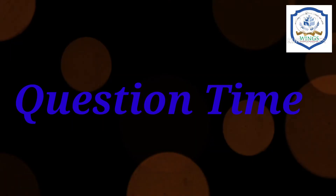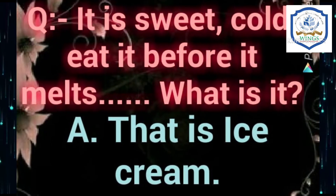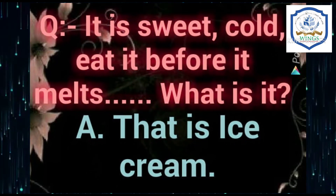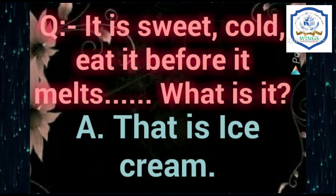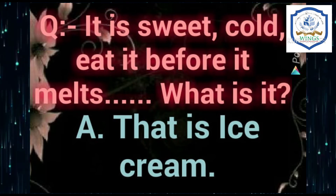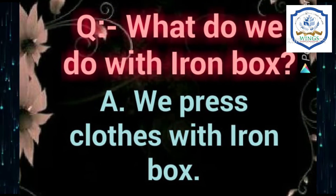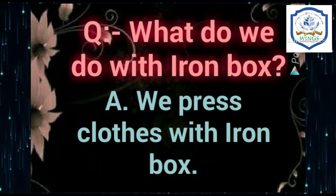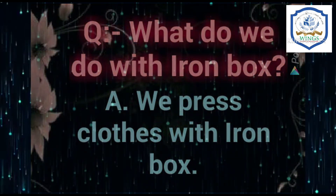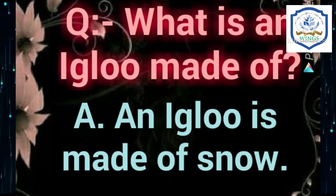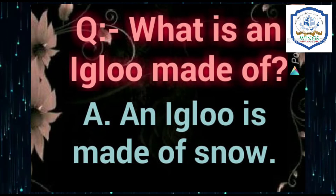Now let's begin question time. Come on children, get ready to answer my questions. First one: it is sweet and cold — eat it before it melts. What is it? That is ice cream. Next question: what do we do with an iron box? We press clothes with an iron box. Next question: what is an igloo made of? An igloo is made of snow.